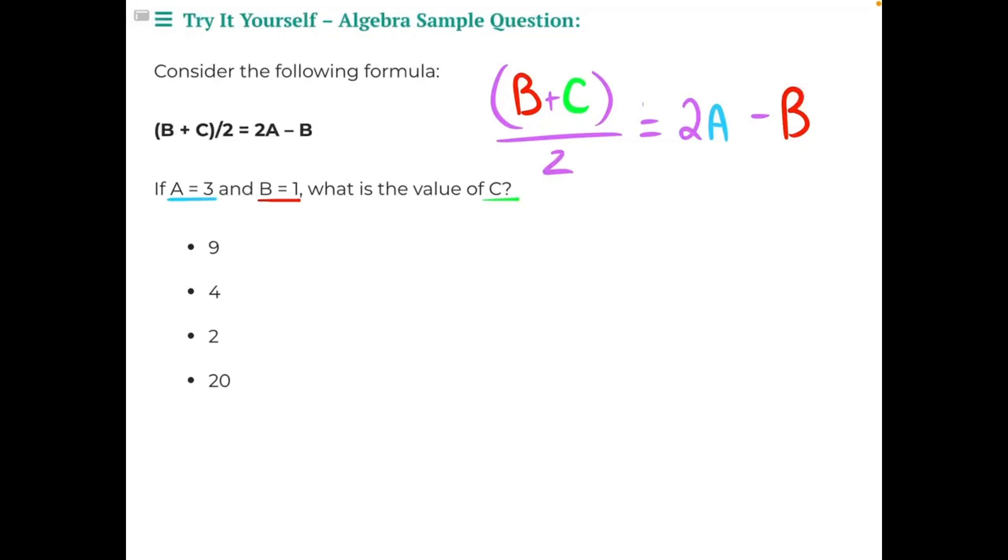Consider the following formula: b plus c divided by 2 equals 2a minus b. If a equals 3 and b equals 1, what is the value of c?